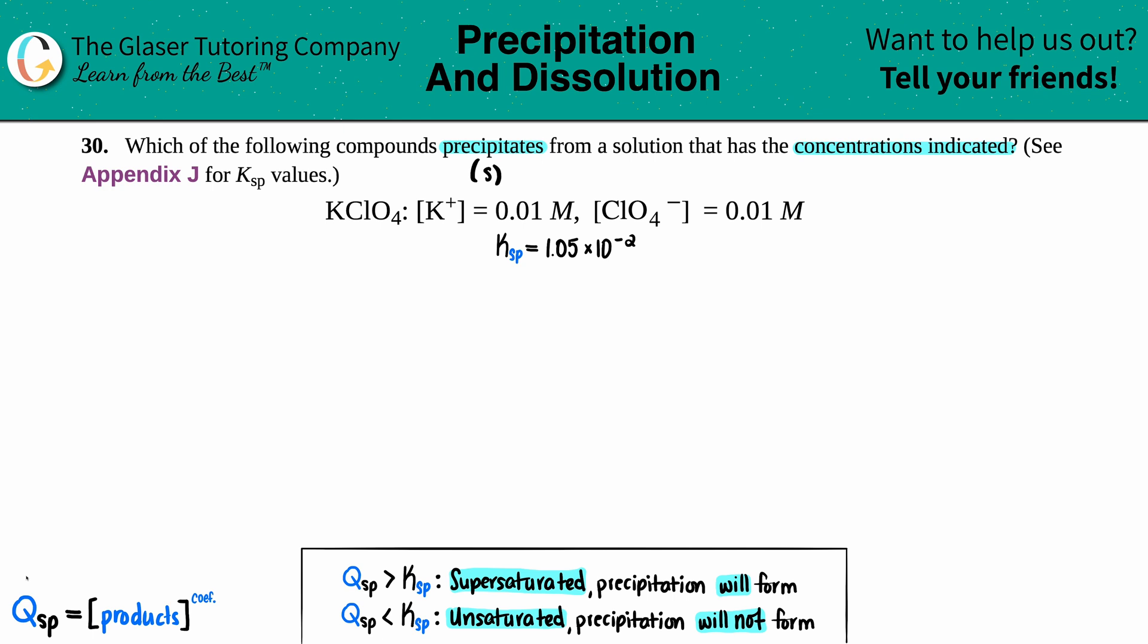So the first thing is, we have to find that balanced equation. So keep in mind with solubility products, Ksp, right? We're always going to have the compound. So in this case, it's KClO4 and that starts as a solid with a double arrow, because we are talking about equilibrium and they told us what our ions are. So this will break down into K plus and ClO4 minus.